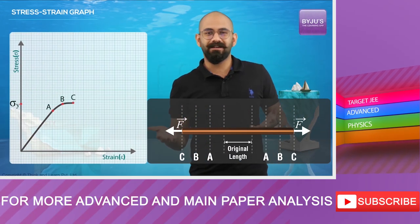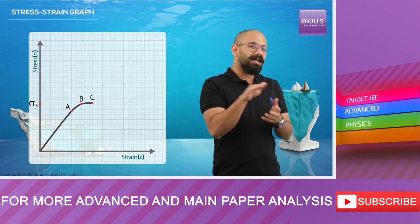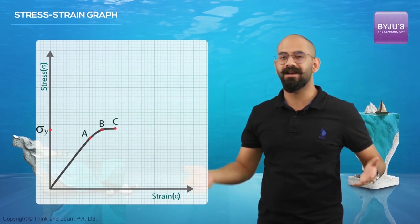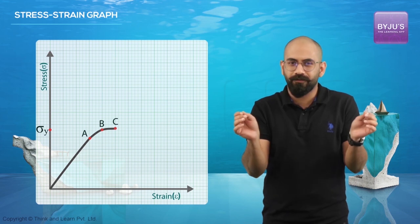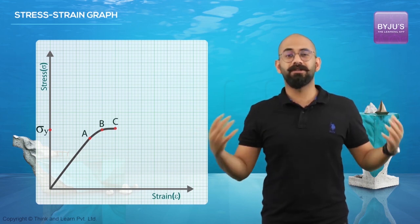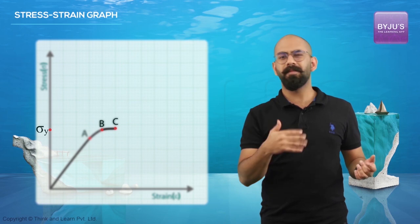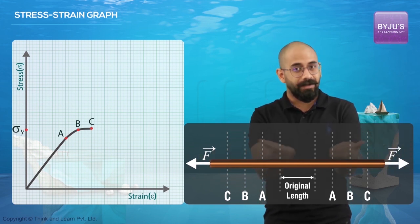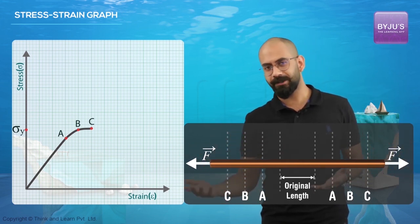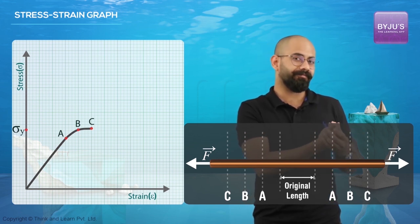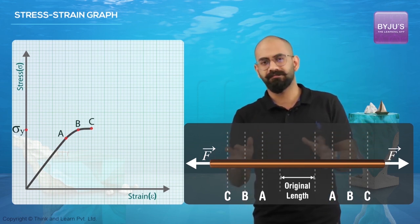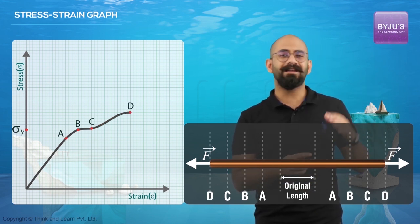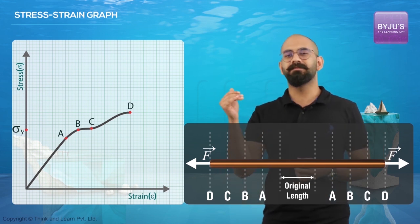What happens beyond that? Till the graph reaches point C, the strain for a corresponding increase in stress is very large — even for a small force the elongation produced is very large — so the slope of the graph from B to C is very small. From C onwards, if I increase the stress beyond C, the slope basically increases, so the strain produced is not as large as in the previous region.